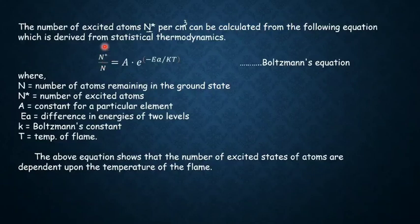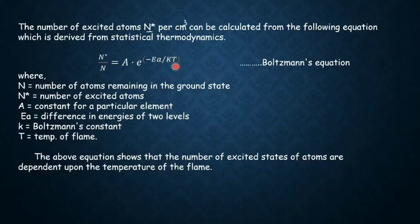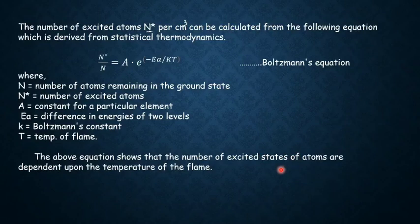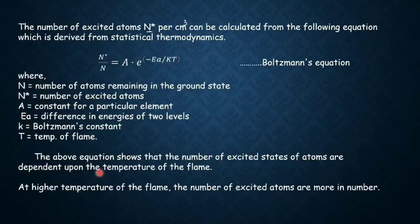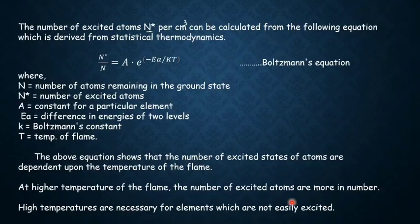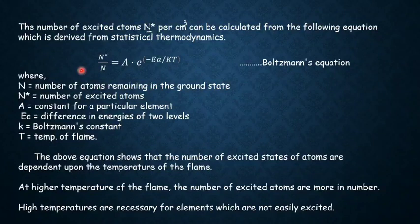The Boltzmann equation shows that the number of atoms in the excited state is directly proportional to the temperature. If the temperature of the flame is high, the value of N* is also high. Higher temperatures are necessary for elements which are not easily excited, so the flame temperature must be high to increase excitation.